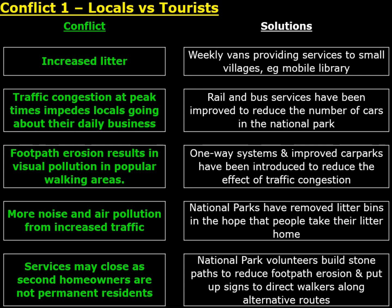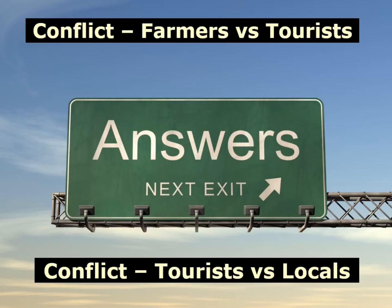Our second conflict is Locals vs Tourists. The same as before — conflicts are down the left with a random selection of solutions down the right. Rewrite these into your notes and match them up correctly. If you have any questions, pop them in the comments below and I'll get back to you as soon as I can. You can also find a link to the answer sheet in the video description, but please make sure you try the work first before checking the answers, as it doesn't really help you learn.